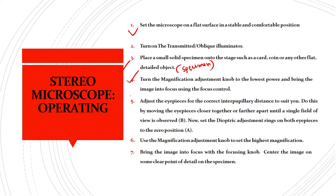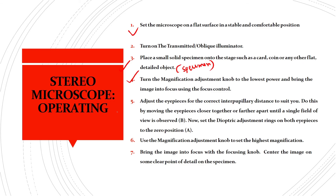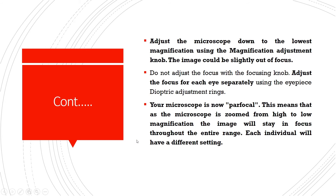Move the eyepieces closer together or farther apart until a single field of view is observed. Set the diopter adjustment rings on both eyepieces to zero. Then use the magnification adjustment knob to set the highest magnification and bring the image into focus with the focusing knob, centering the image on a clear point of detail on the specimen.